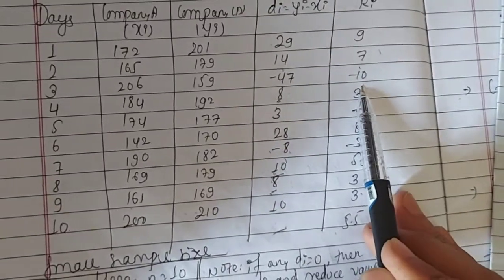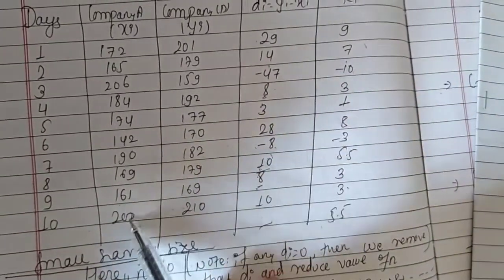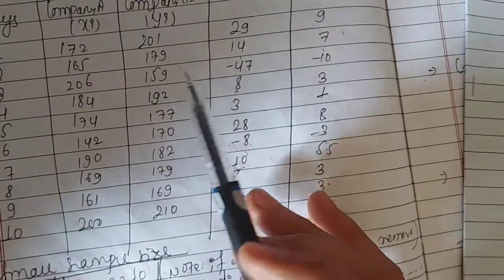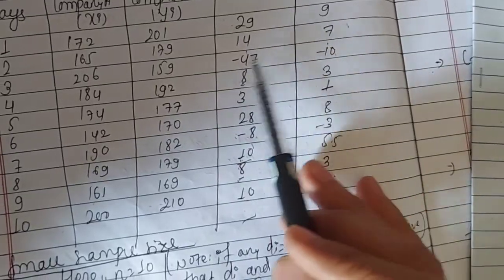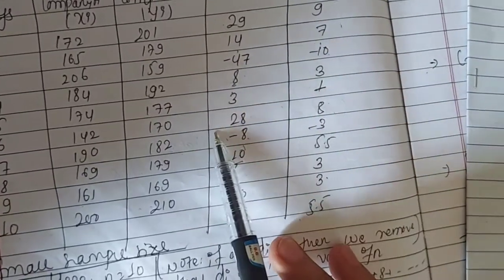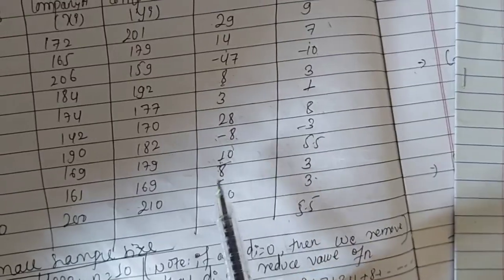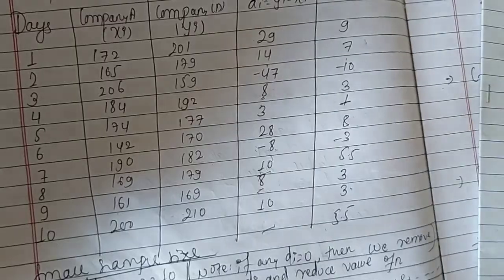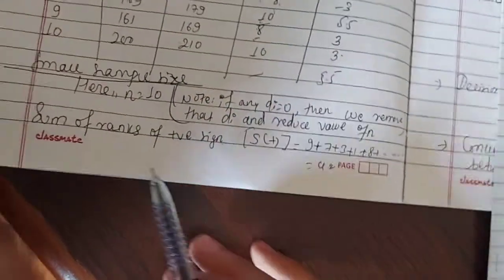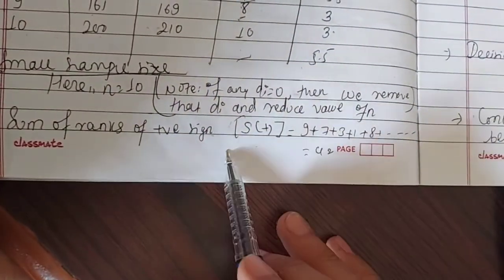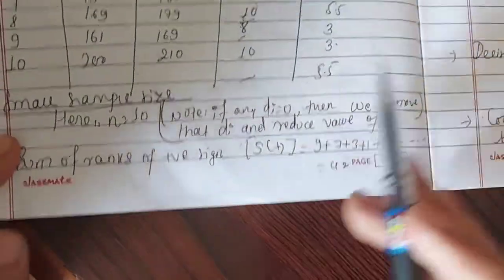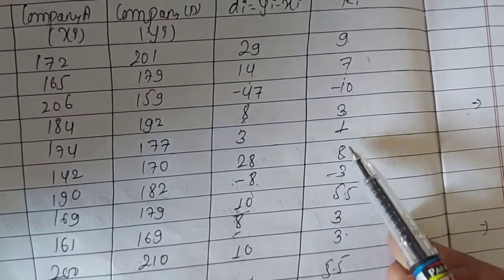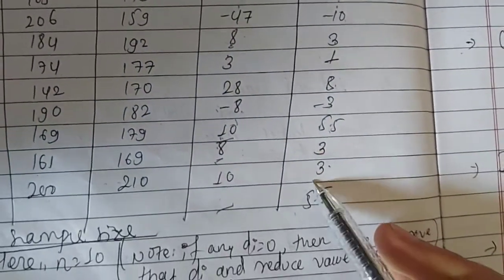The total number of ranks is 10. The negative ranks include minus 47 and minus 8. The positive signed ranks are: 9, 7, 3, 1, 8, 5.5, 3, 5.5.